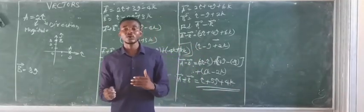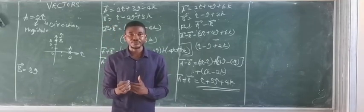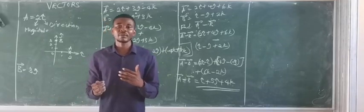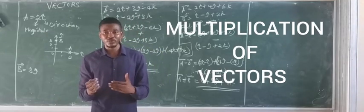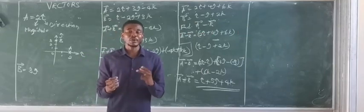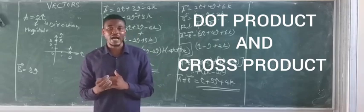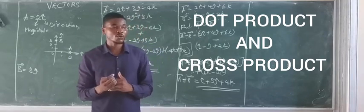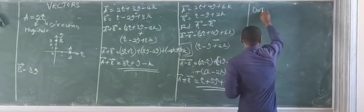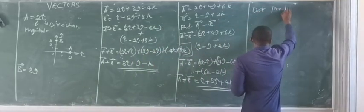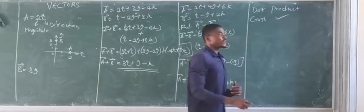Vectors can only be added or subtracted when they are in the same direction. Now, another component of vectors we are going to talk about is multiplication of vectors. Under multiplication, we have two kinds: the dot product and the cross product of vectors.